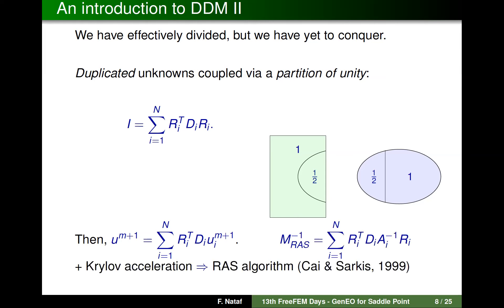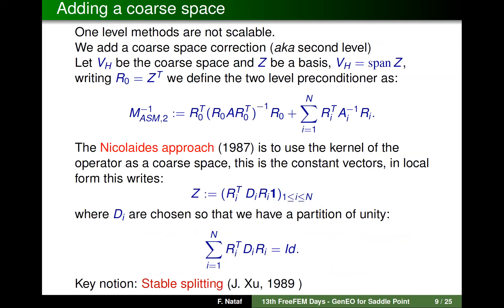Working through this, what you have built is a preconditioner called the Restricted Additive Schwarz (RAS), which has a compact formula where N is the number of subdomains. Using this preconditioner with a Krylov acceleration gives the method. A very important concept in domain decomposition is to have more than one level, because one-level methods are not scalable: information can only travel between neighboring subdomains, so the iteration count to convergence grows with the number of subdomains in one direction.